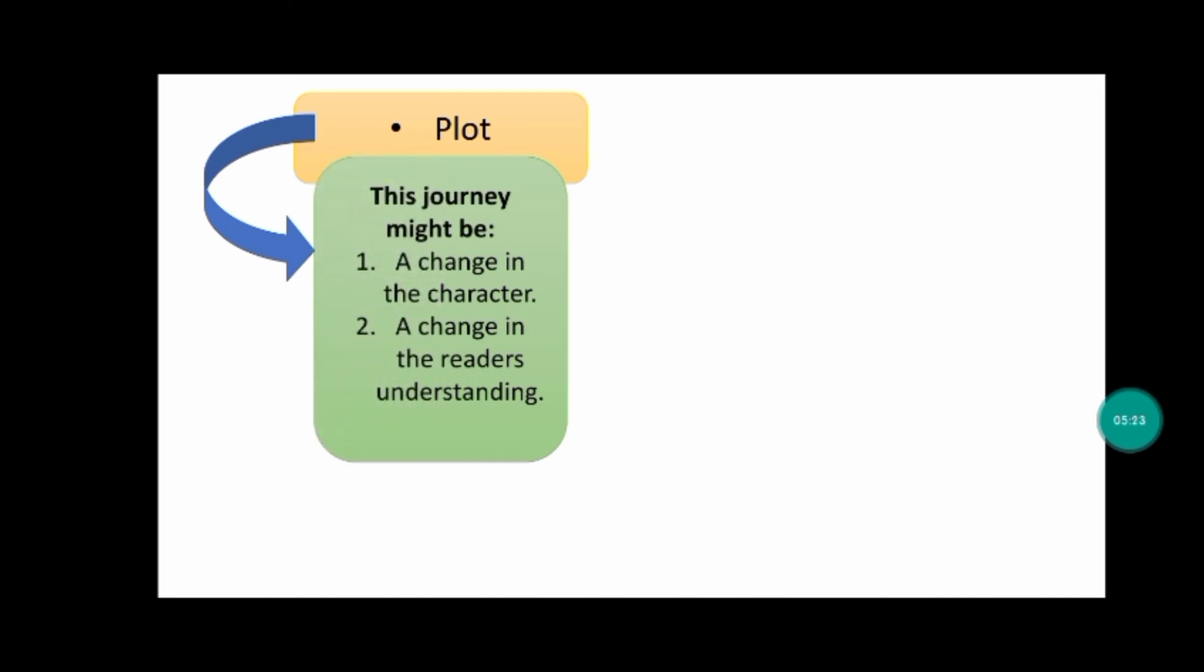This journey might be, number one, a change in the character. For example, the character overcomes a challenge. And number two, a change in the reader's understanding. An example of this is, in the beginning, readers think the protagonist was falsely accused of murder, and at the end, readers understand that he is guilty. So your novel's plot is the road map you will take from point A to point B.